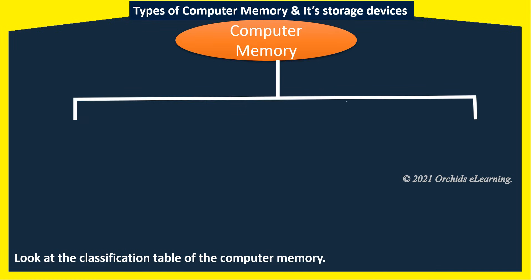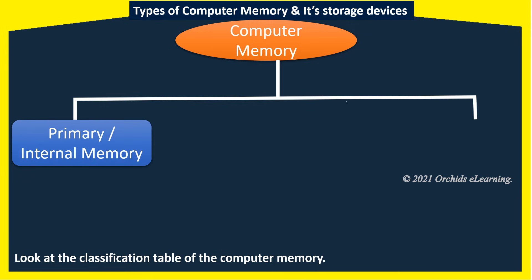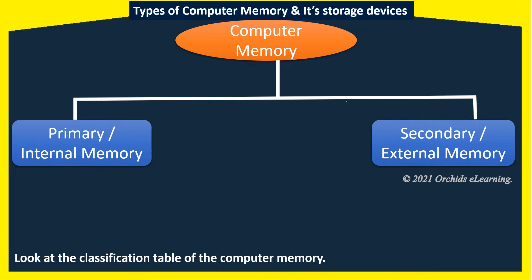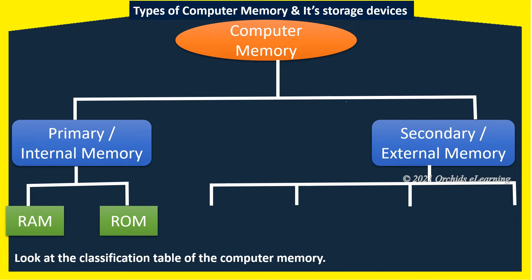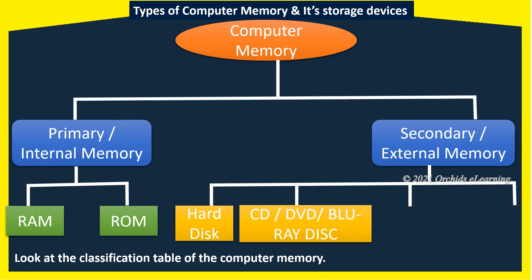Computer memory is classified into primary or internal memory, and secondary or external memory. Internal memory is further divided into RAM and ROM. External memory is classified into hard disk, CD, DVD, Blu-ray disk, pen drive, and memory card.